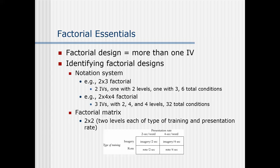Factorial design means that you have more than one independent variable. You usually have two independent variables, or maybe even three or four. In social psychology, my field, two or three independent variables — that is, a three-way or three-factor factorial design — is pretty common. In experimental psych, you may get up to four or five factors. Beyond five, it's really hard to predict, and so no one really does that, but I've seen some with many factors.